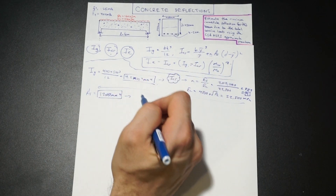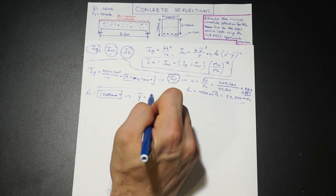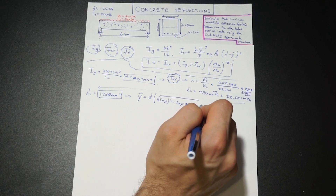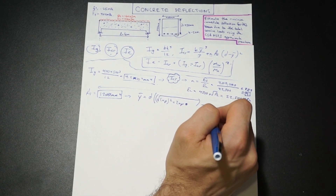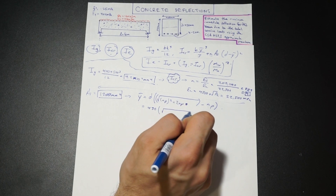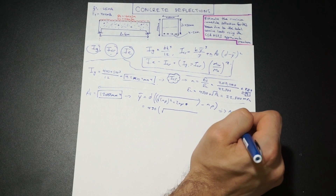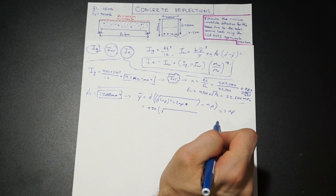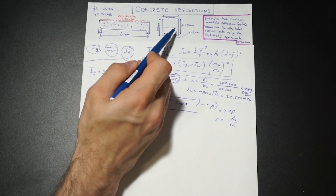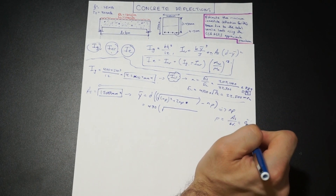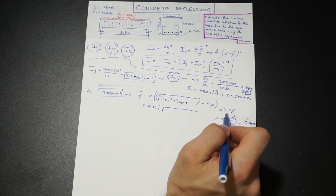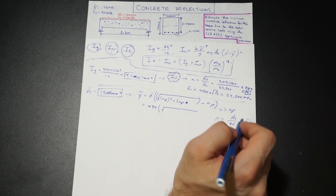Next, we're going to find Rho, and let's look at what Y bar is for our cracked section. Y bar equals D times the square root of (NP squared plus 2NP) minus NP, where D, the effective depth, is given as 430 mm. Rho is simply AS over BD: 1,200 divided by 400 times 430, giving us Rho equal to 0.007, or a reinforcement ratio of 0.7%. NP equals N times Rho: 9 times 0.007 equals 0.063. Plugging in, we get a Y bar value of 128 mm.